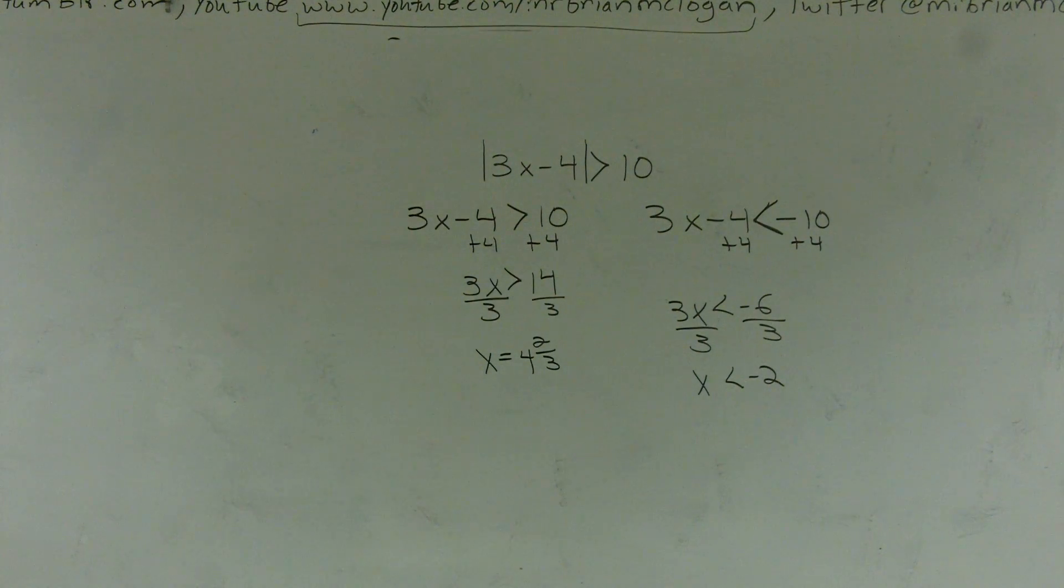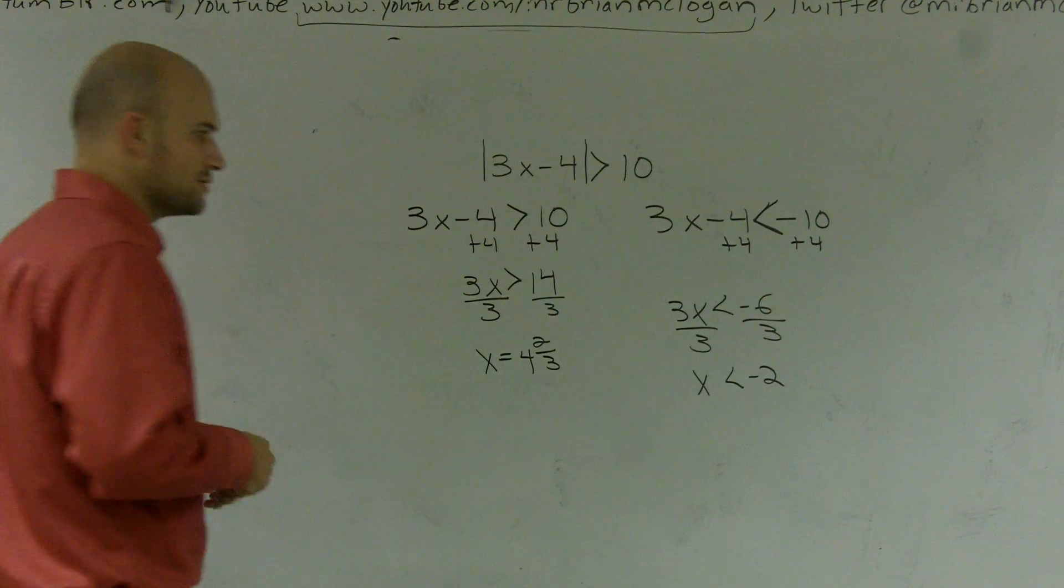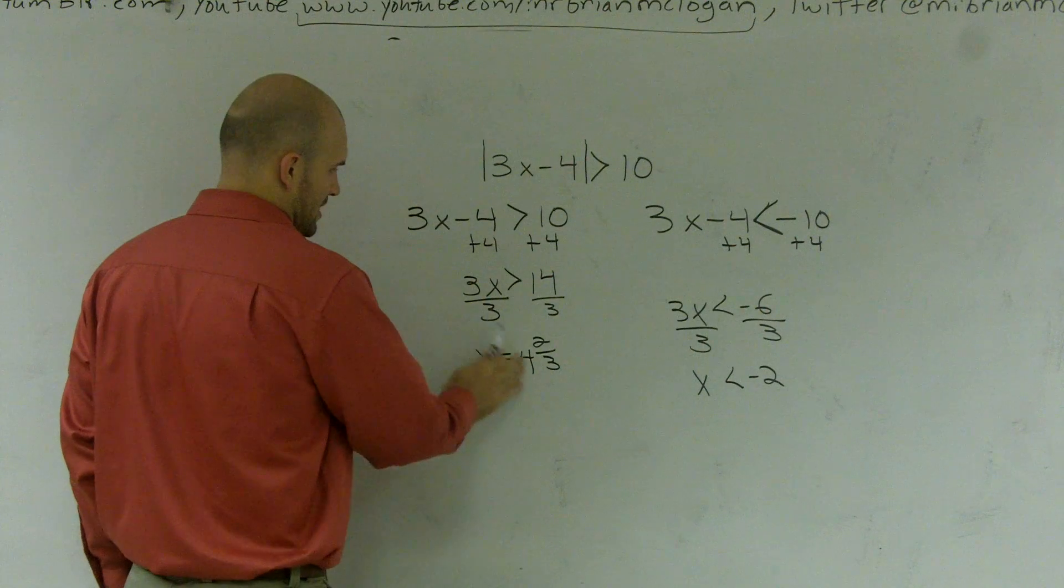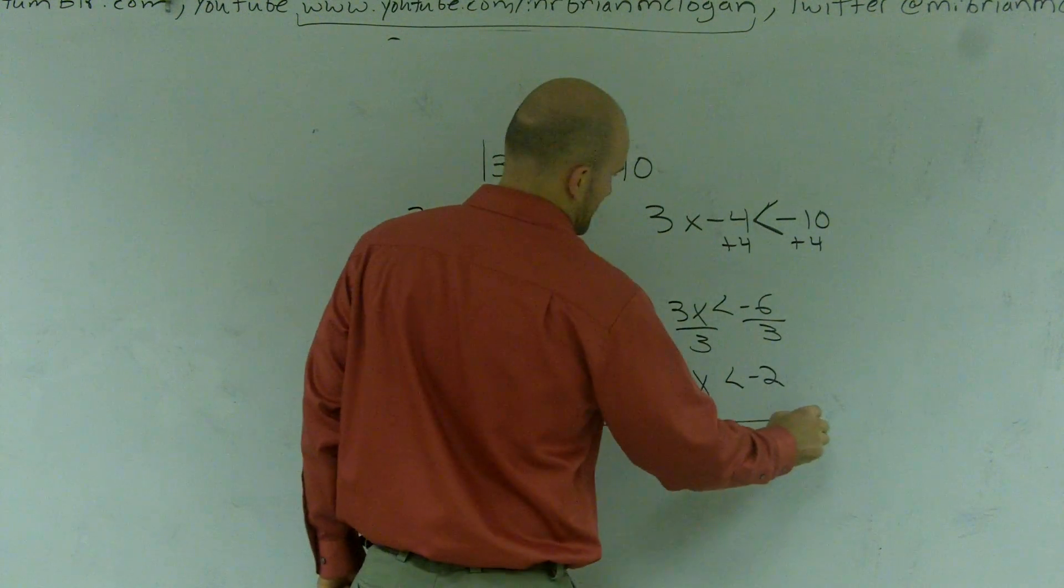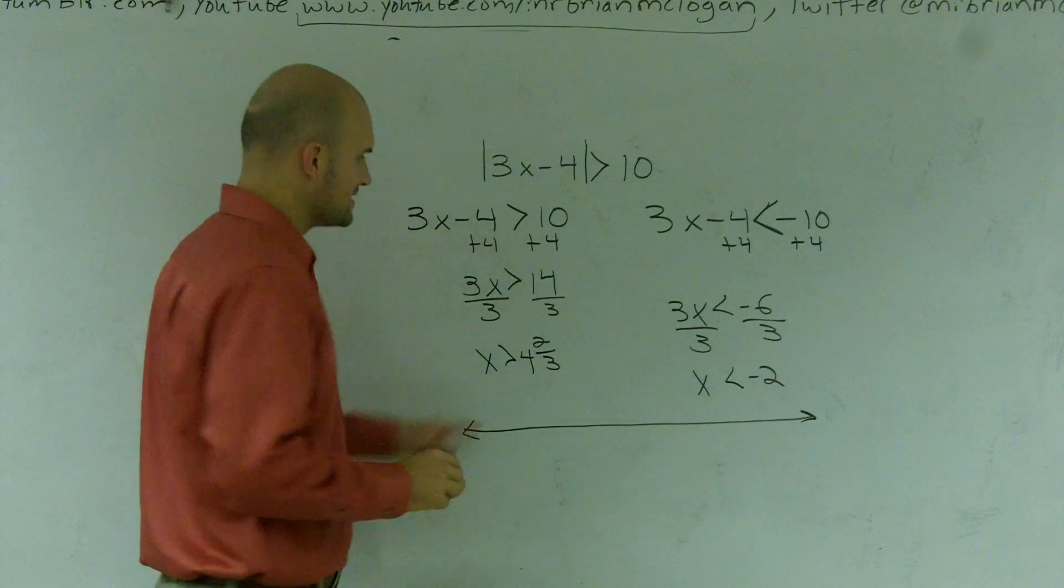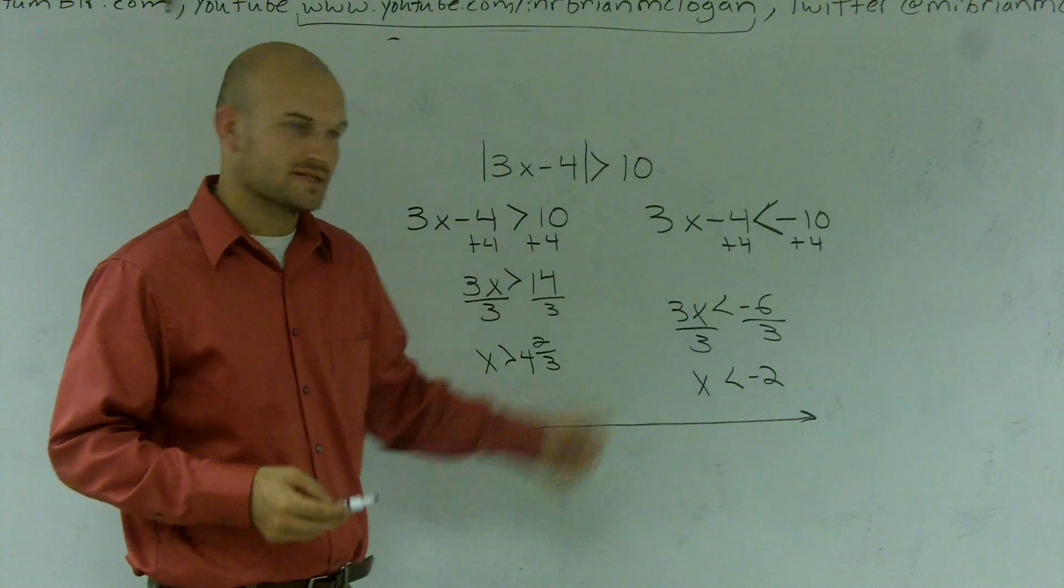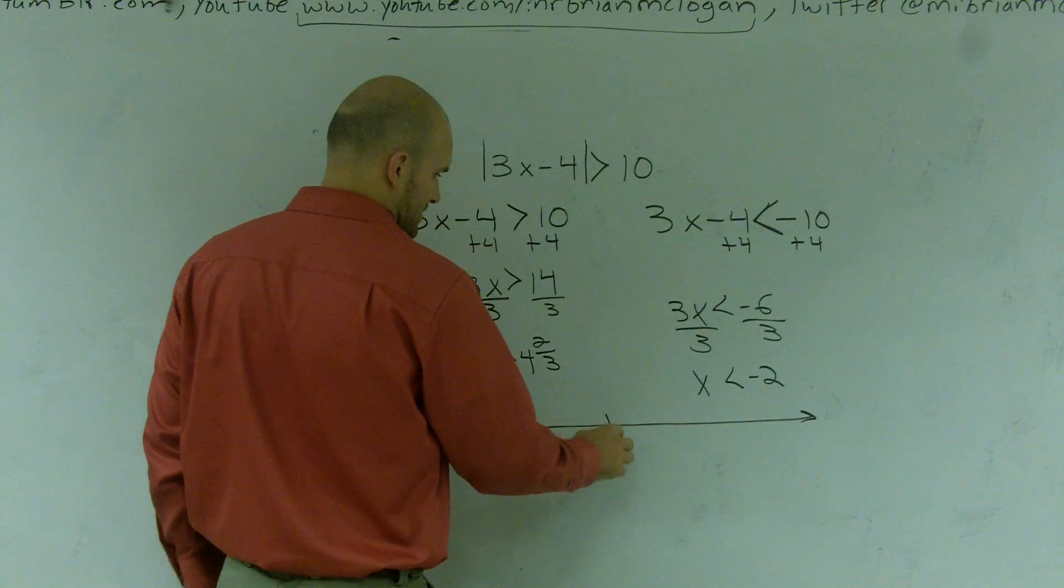So the next thing that I want to create now is I need to do my number line. So my number line is going to have to at least include 4 and 2 thirds and negative 2. So I'll make sure at least I have that.